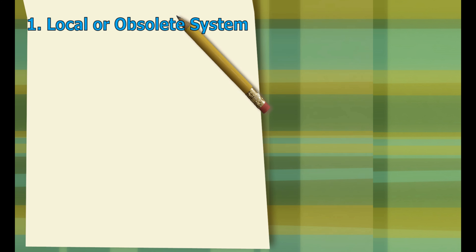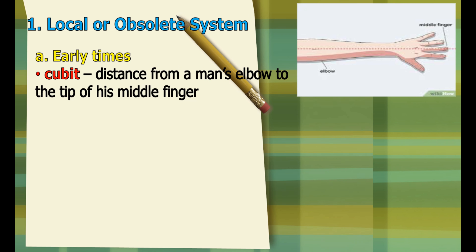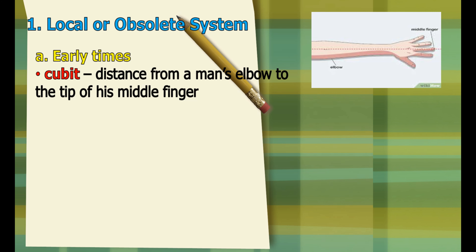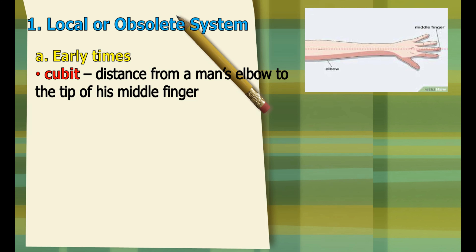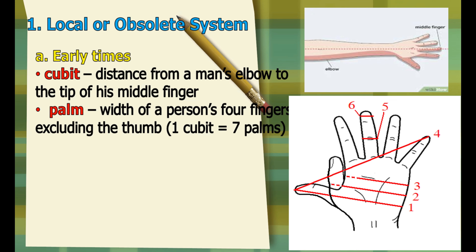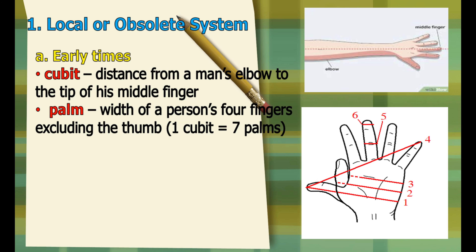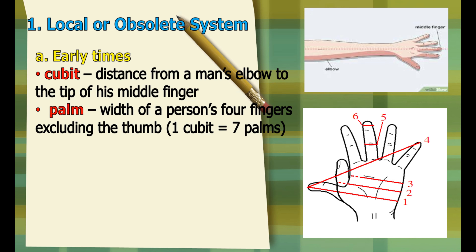Let's proceed now to the different systems of measurement. The first one is the local or obsolete system. During the early times, ancient people used their body parts in measuring. The first one is cubit, which is the distance from a man's elbow to the tip of his middle finger. Next is palm, which is the width of a person's forefingers excluding the thumb. One cubit is equivalent to seven palms.